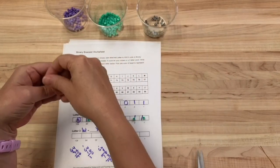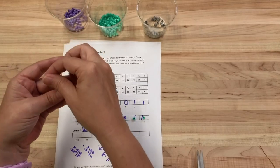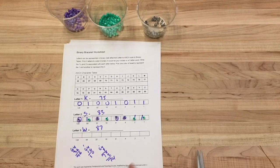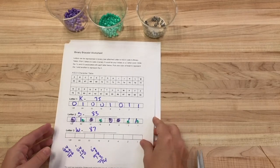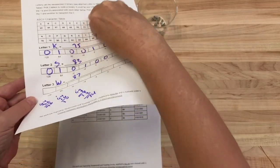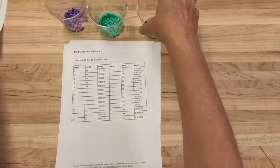And then I'll string the rest of them together, tie them up, and I have a binary bracelet. Now if you don't have access to these supplies, the other option you can do is the binary bookmark.